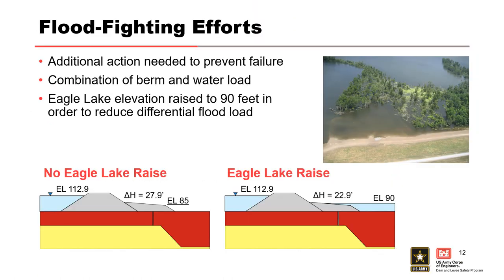With the Mississippi River elevation continuing to rise and the levee embankment and untested emergency berm being subjected to record flood loading, engineers with the Vicksburg District didn't feel confident that the emergency berm alone would be sufficient. Geotechnical engineers advised that a combination of berm and land side water load would be necessary to adequately fight the under-seepage forces. After serious consideration of the pros and cons, the decision was made to deviate from the water control plan and raise the elevation of Eagle Lake to 90 feet — 12 feet higher than normal — impacting approximately 800 residents whose property became flooded.